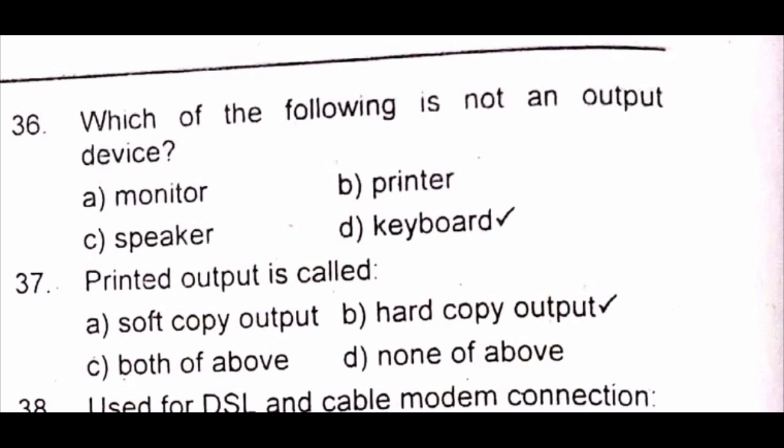Question 36: Which of the following is not an output device? A) monitor B) printer C) speaker D) keyboard. The answer is D) keyboard. Question 37: Printed output is called A) soft copy output B) hard copy output C) both D) none. The answer is B) hard copy output.